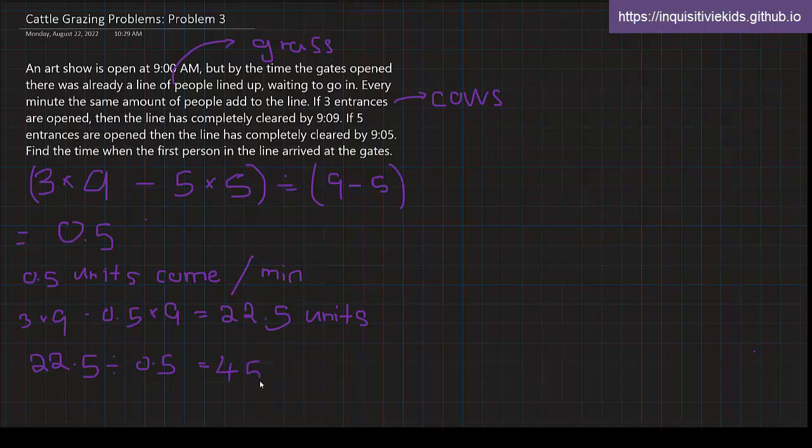Well, this isn't our final answer yet. We know the first person waited 45 minutes. So what is 45 minutes before 9 AM? That would be 8:15. The final answer is 8:15 AM.